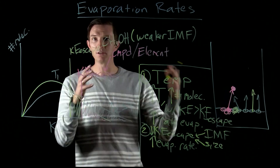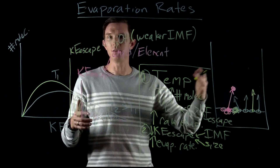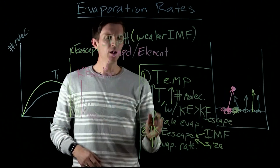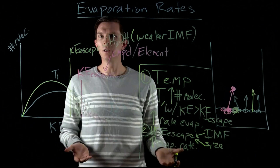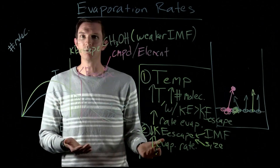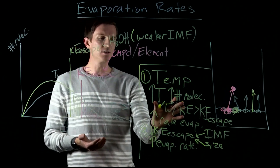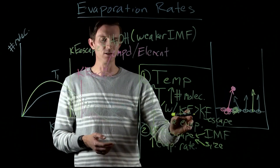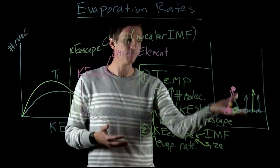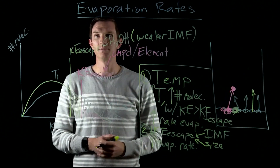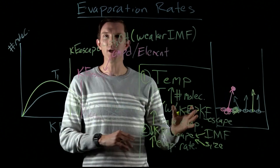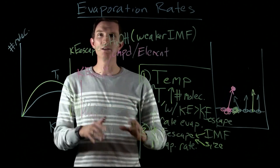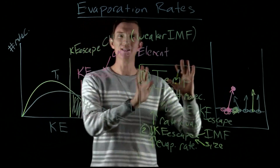In summary: a lower escape kinetic energy — from weaker intermolecular forces or smaller molecules — leads to a higher evaporation rate. For a single compound, increasing temperature gives more molecules enough kinetic energy to escape, raising the evaporation rate. In the next video we'll look at the connection between evaporation rate and the concept of vapor pressure.